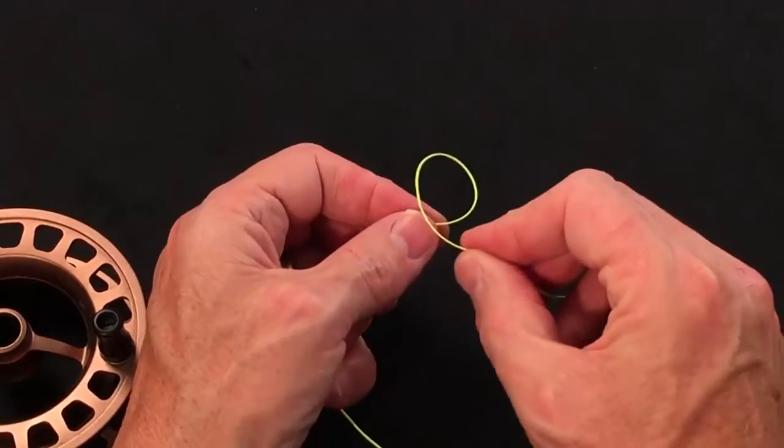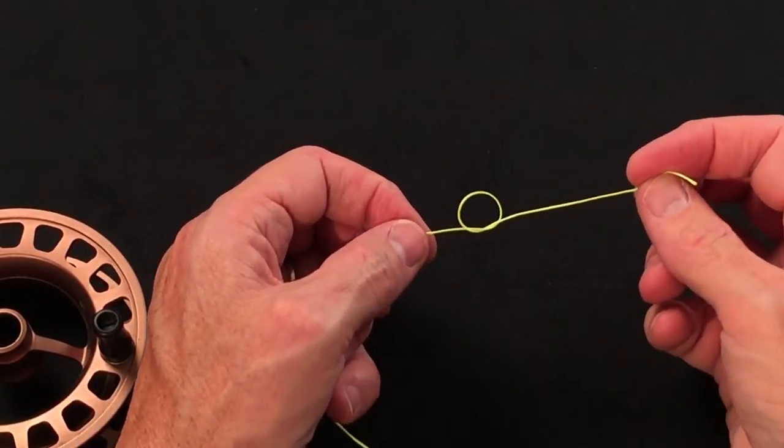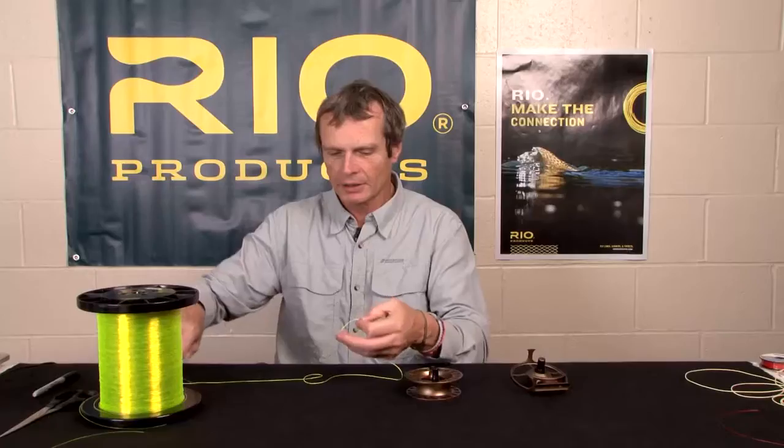What I tend to do right at the beginning, I tie a little overhand knot here, kind of a jam knot, and I just pull that in and tighten that up. Snip off the tag of that.